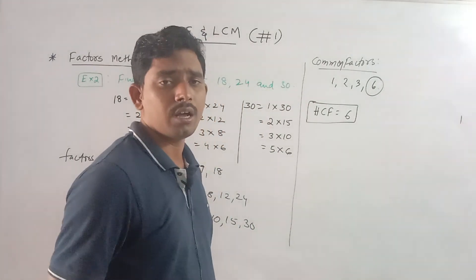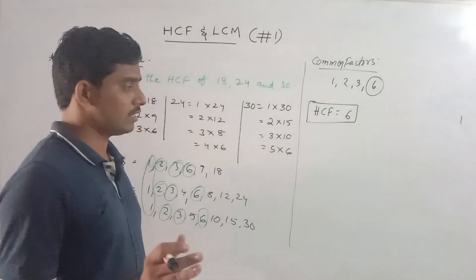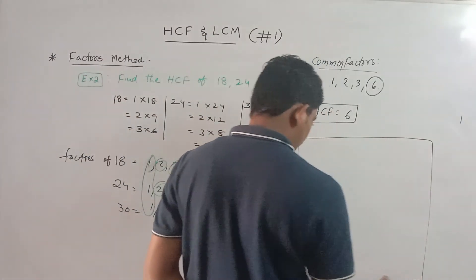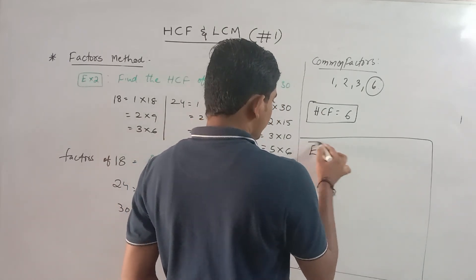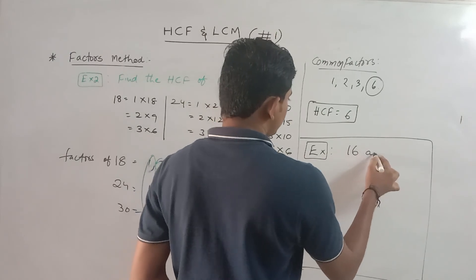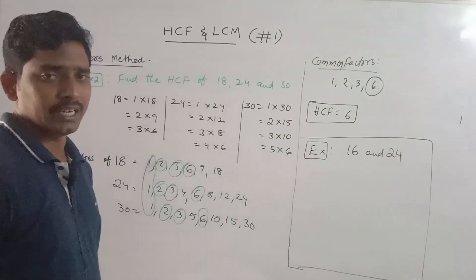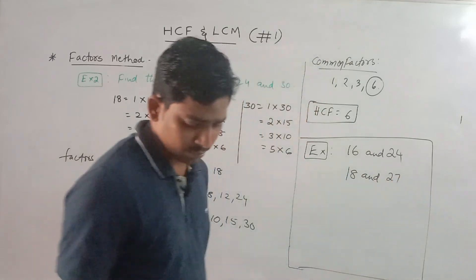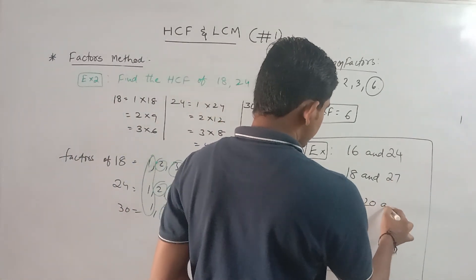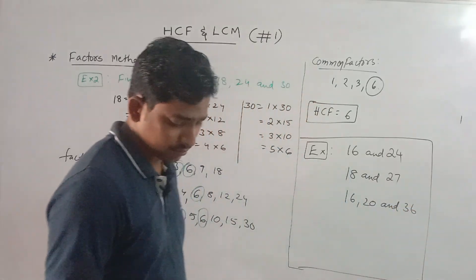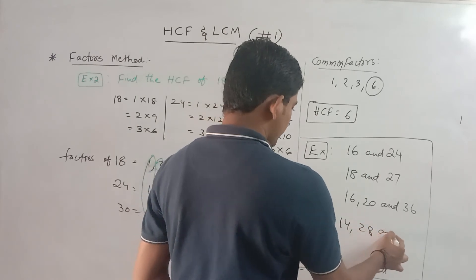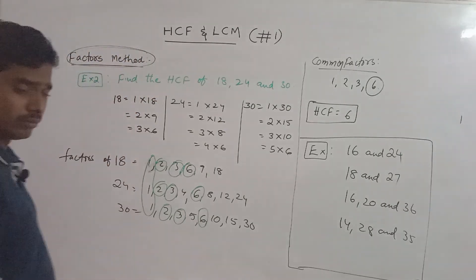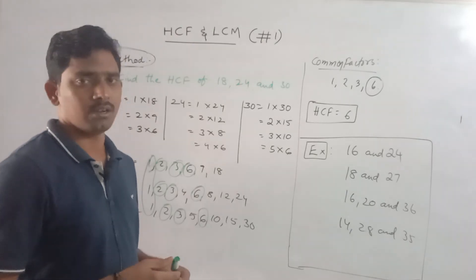Now I will give you some practice examples using the factors method. Try to find the HCF of 16 and 24, and also 28 and 35 using the factors method. For the second method — prime factorization — we will cover that in the next video.